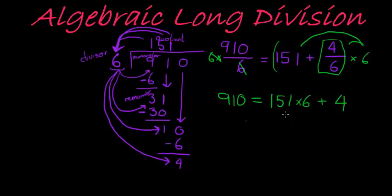So, one way of looking at this is just saying, well, to get 910 using 6, I have to multiply 6 with 151 to get close to 910, and then I can add 4 more to get to 910. That's one way of looking at it.